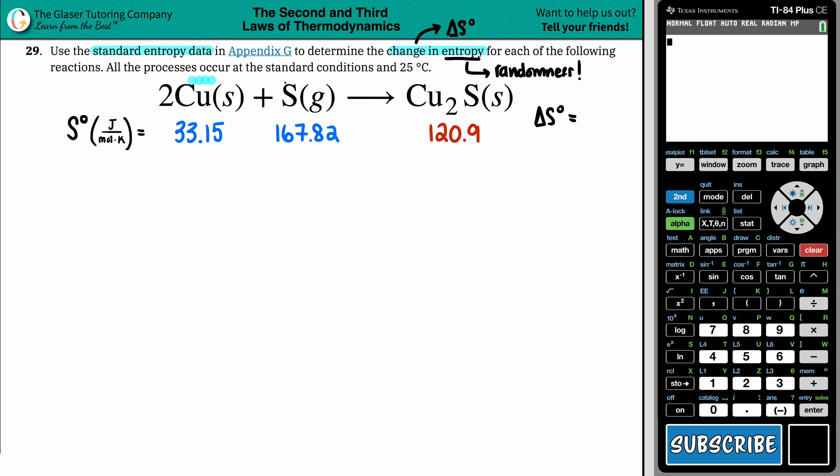But gases, they're kind of like all over the place. If you're taking this into consideration, and you're only making something that is very structured, aka solid, you're losing randomness because you're losing the gas. No more gases on the product side.